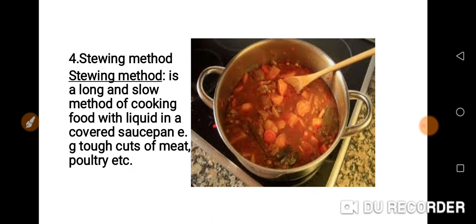The next method is steaming method. Steaming method is a slow and long method of cooking food with liquid — that is, with water — in a covered saucepan. We can use this method for preparing tough cuts of meat or chicken. Steaming method is a long and slow method of cooking food with liquid in a covered saucepan.